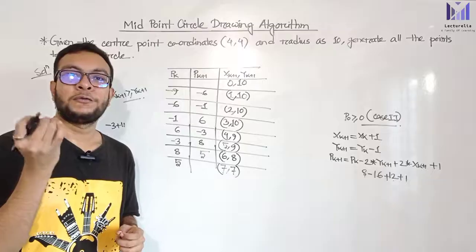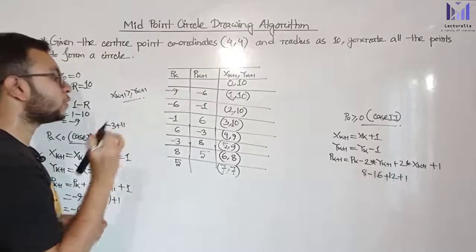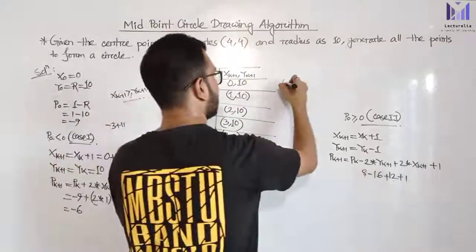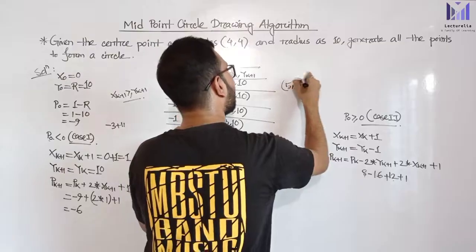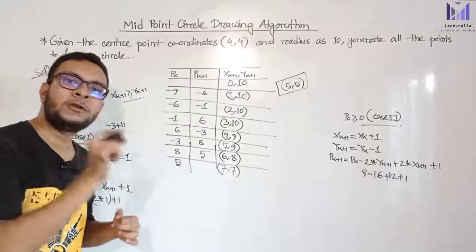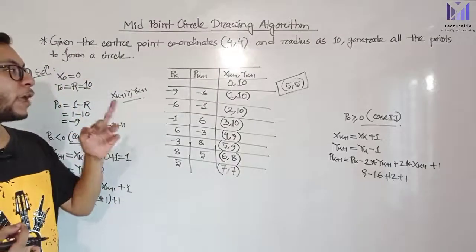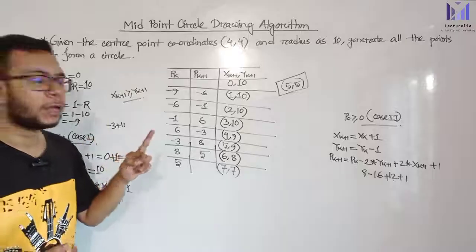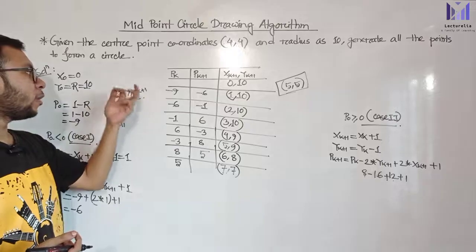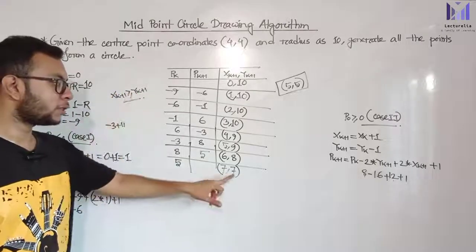We have completed the midpoint circle drawing algorithm for this numerical. The first numerical solved had center at (0,0) and the starting point was (0, 10). We include that 5,5 point, but the stop condition is: when xk+1 is greater than or equal to yk+1, we stop.